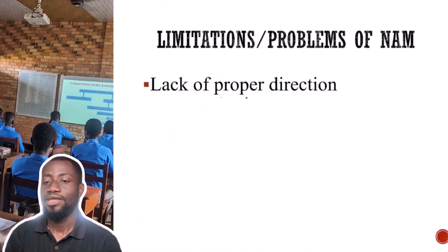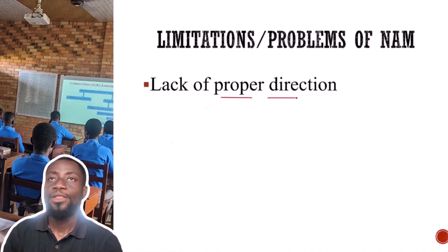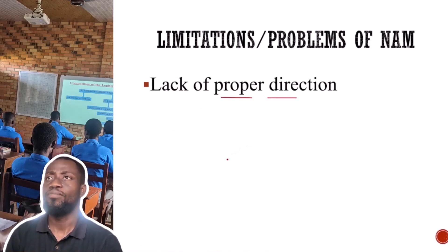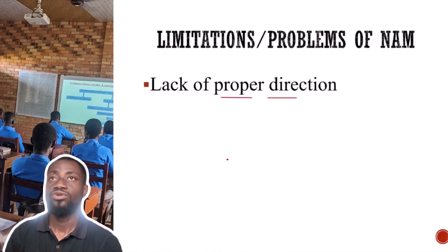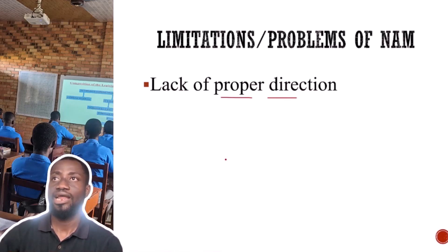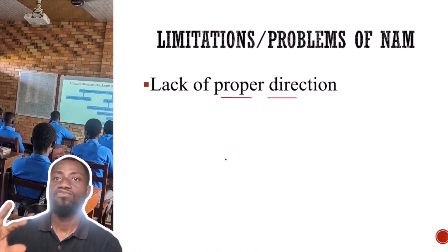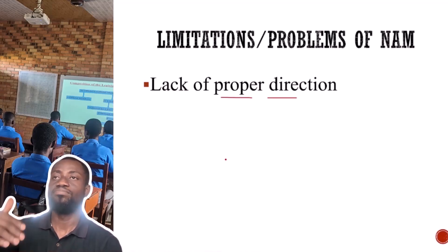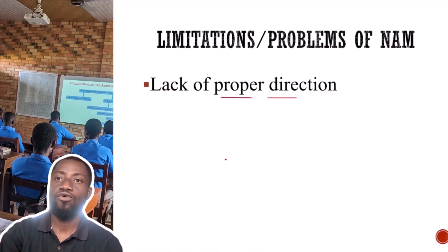Now let's take a look at the last point — the limitations or problems of the NAM. The first is lack of proper direction. NAM, as an organization, has no proper direction as to where they want to take their members. It's all about not aligning with any of them, but there hasn't been any proper ultimate goal set for all members.